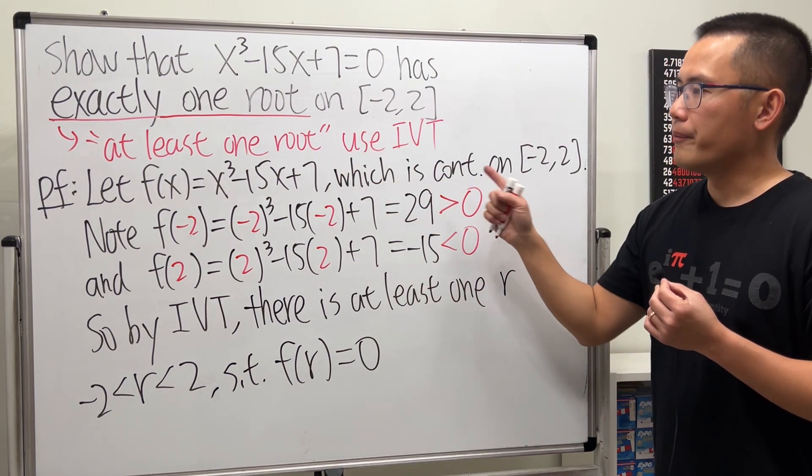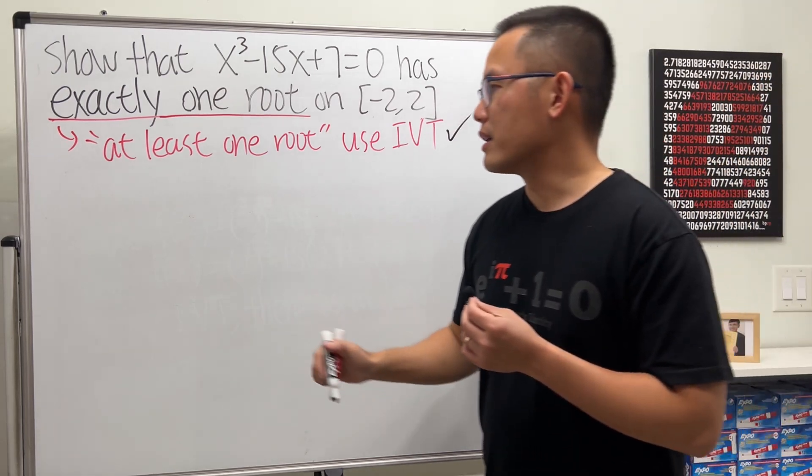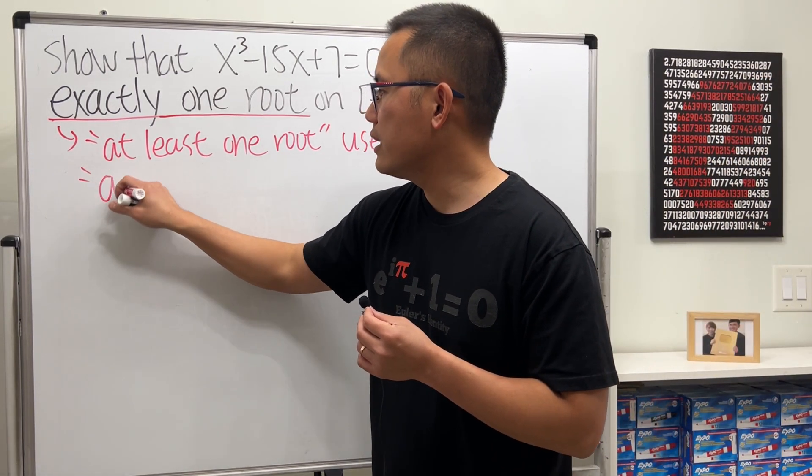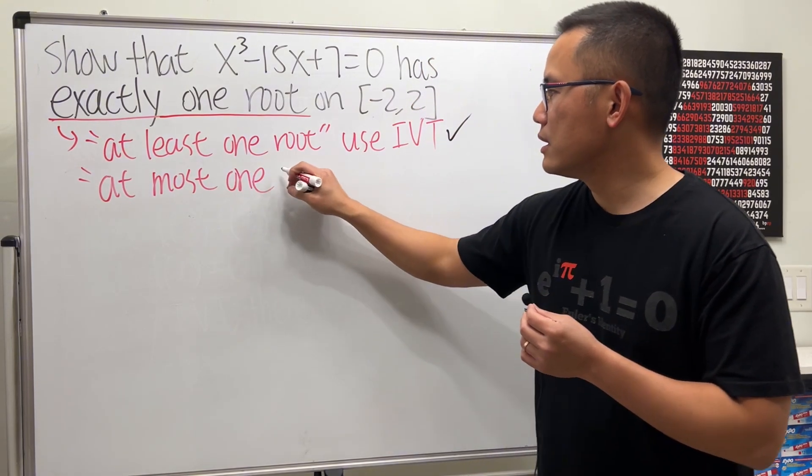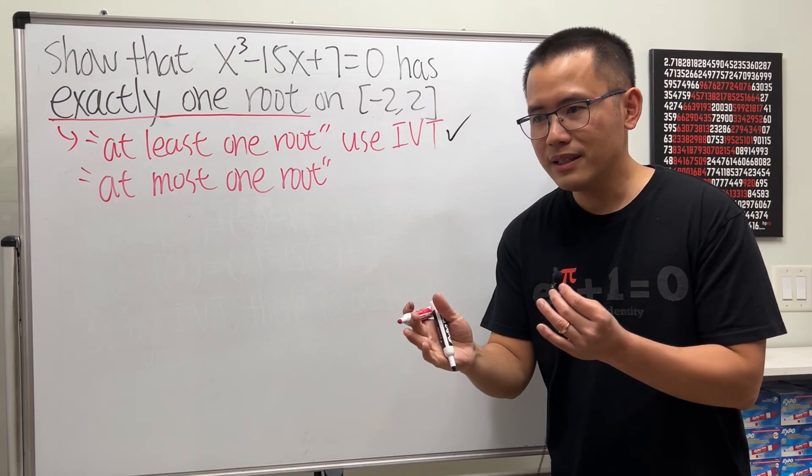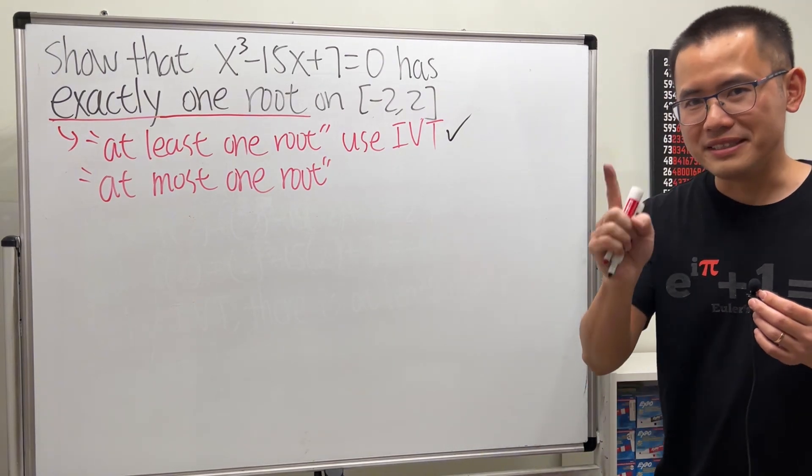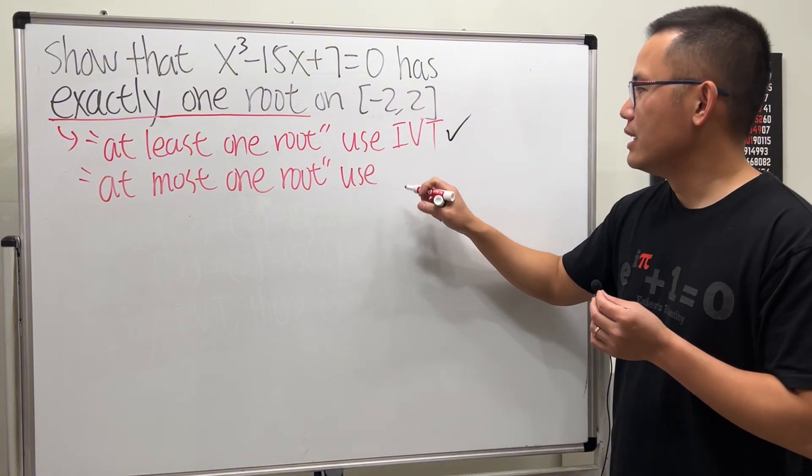Now this part is done. Now for the second part we will have to show the equation has at most one root, because when you have something that's at least one and at most one, that means you have exactly one. And to do this we will have to use contradiction.